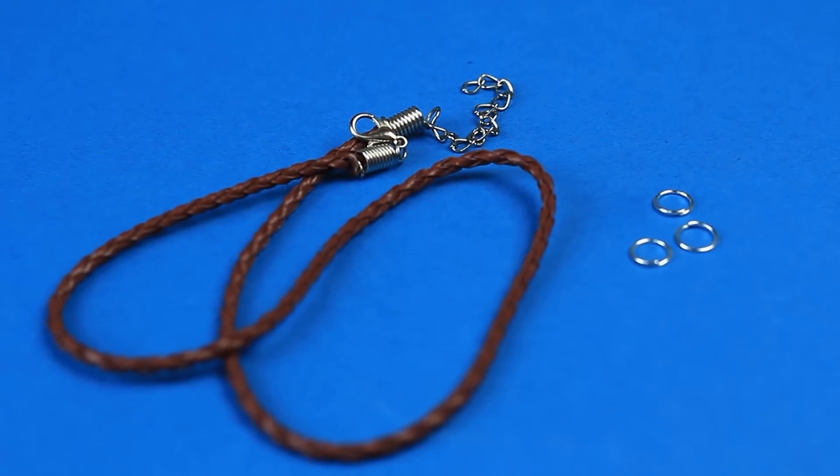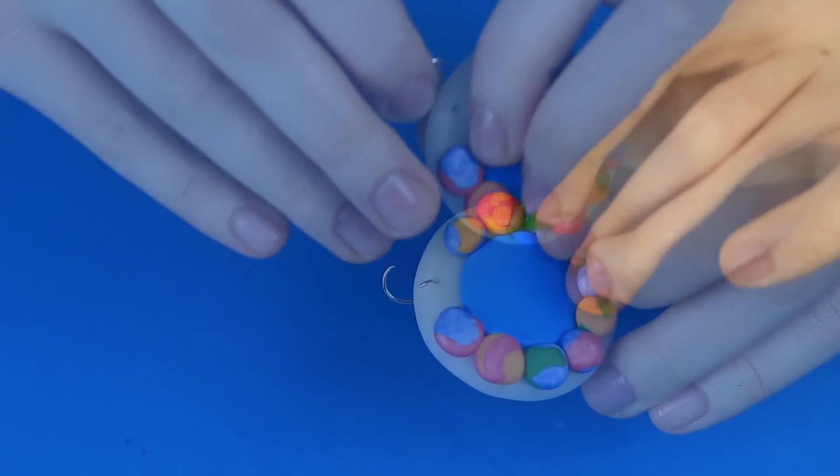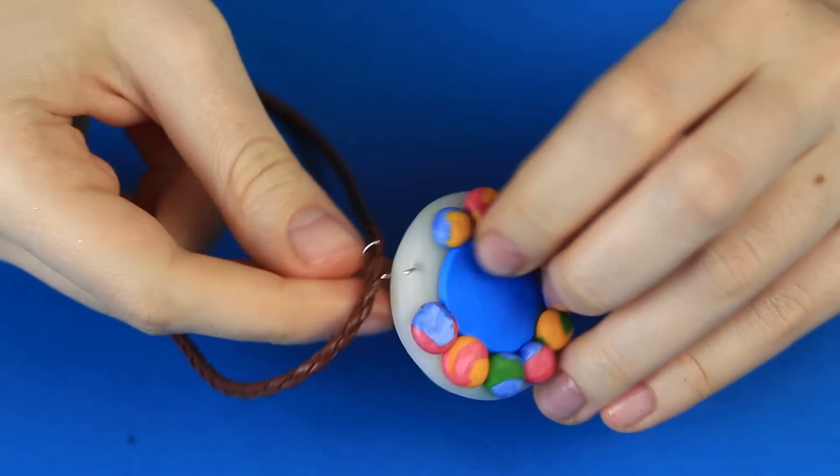Take jump rings and braided cord. Open a ring and pass it through the hole. Put it on the cord and close the ring.